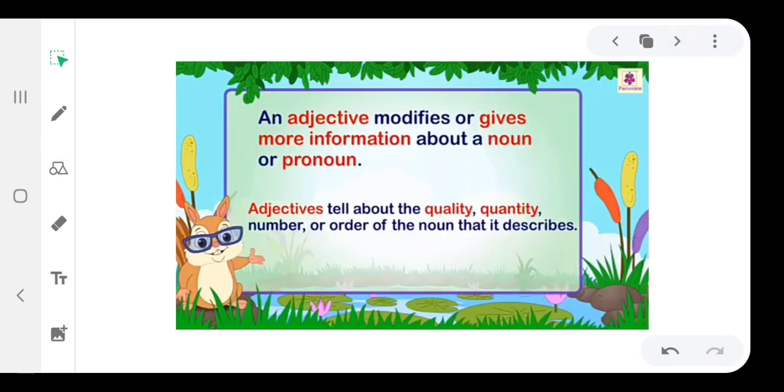An adjective modifies or gives more information about a noun or pronoun. It tells about the quality, quantity, number, or order of the noun that it describes.